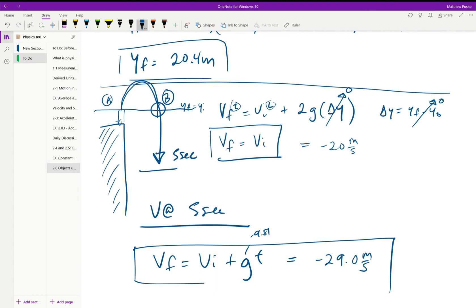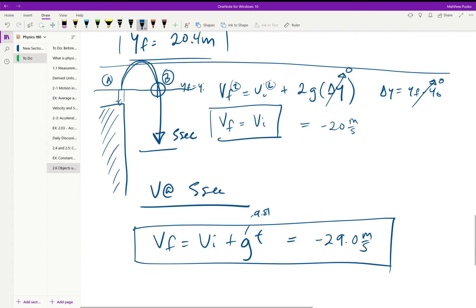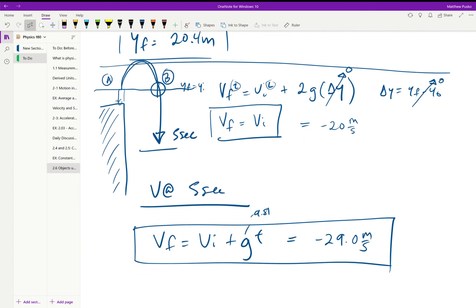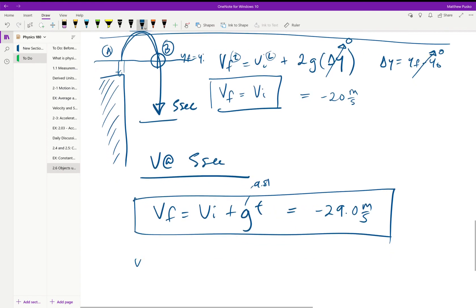If we wanted to find the position at five seconds, we would throw it into our position equation for y final is equal to y initial plus velocity in the y direction times time plus one half g t squared. Go ahead and crank this out at five seconds. It would be at a position of negative 22.5 meters from the top of the building.